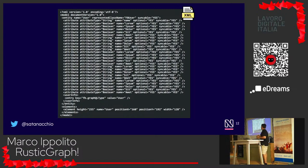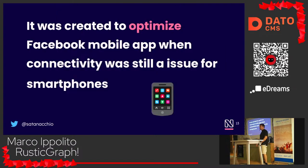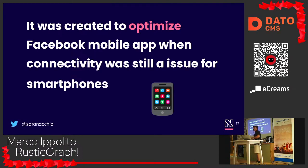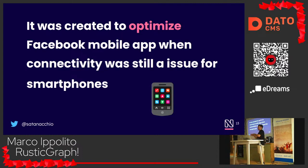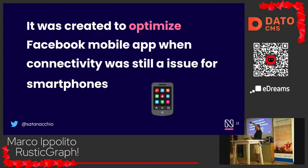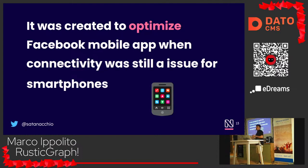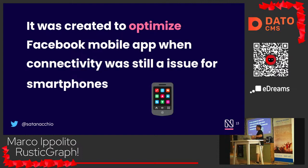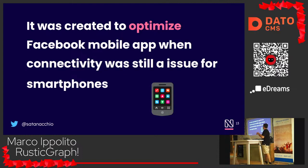Why GraphQL? What was the problem it was solving? Facebook was born during a period where mobile phones had limited connectivity. With REST, they had to do a lot of HTTP calls to retrieve comments, lists of comments, and data that required many HTTP requests. So they said, let's consolidate everything into one HTTP call — put all the data we need into one big request.